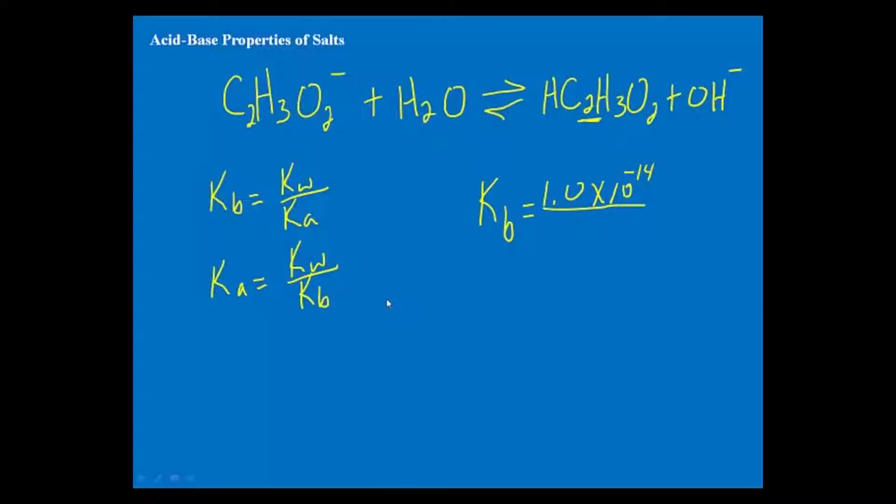So in this case, I would go look up Ka for acetic acid. I'd find 1.8 times 10 to the minus fifth. Plugging that in the calculator, Kb for acetate turns out to be 5.6 times 10 to the minus tenth. So that's what we did in the previous video.